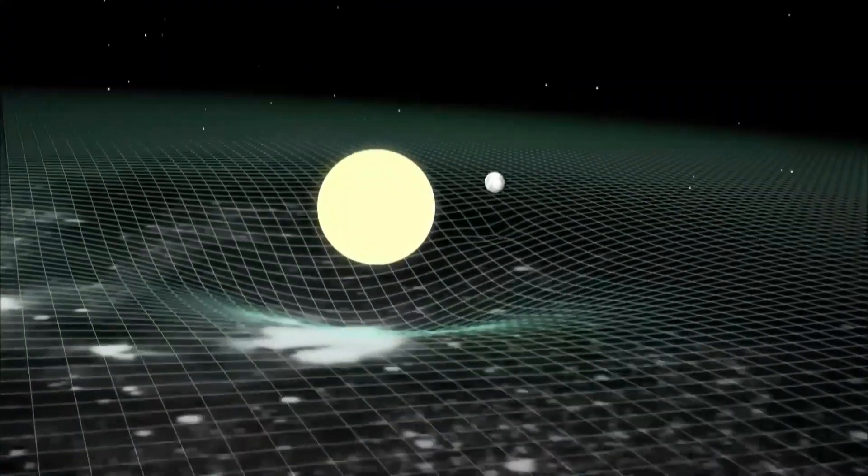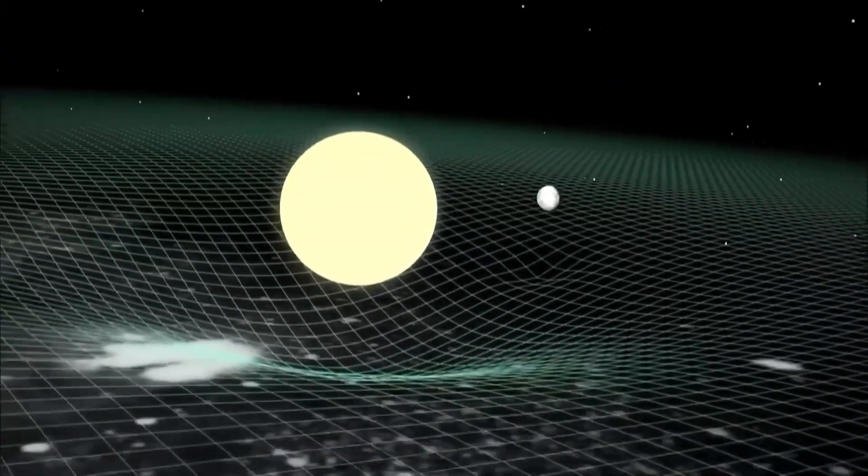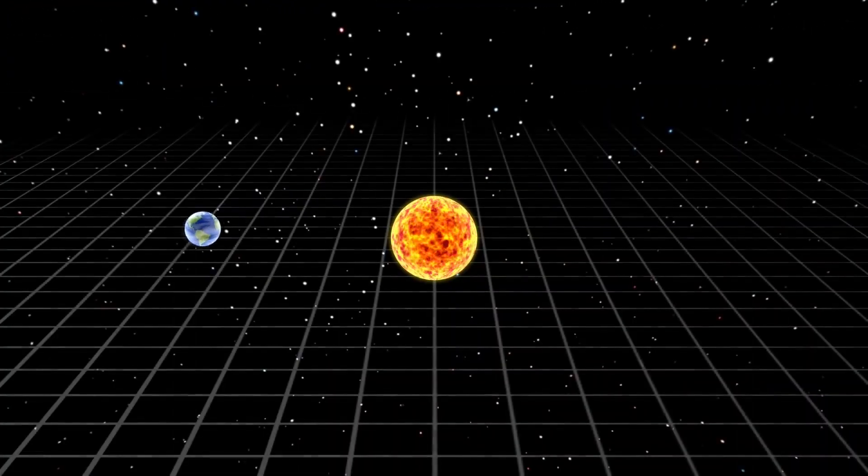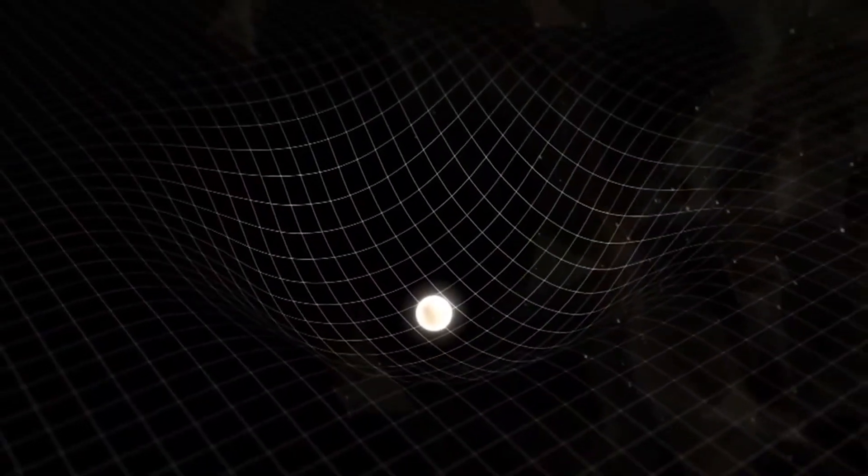Einstein then published his theory of general relativity, which tells us that objects with mass have gravity, and this gravity is a distortion of time and space, instead of being an actual physical force.